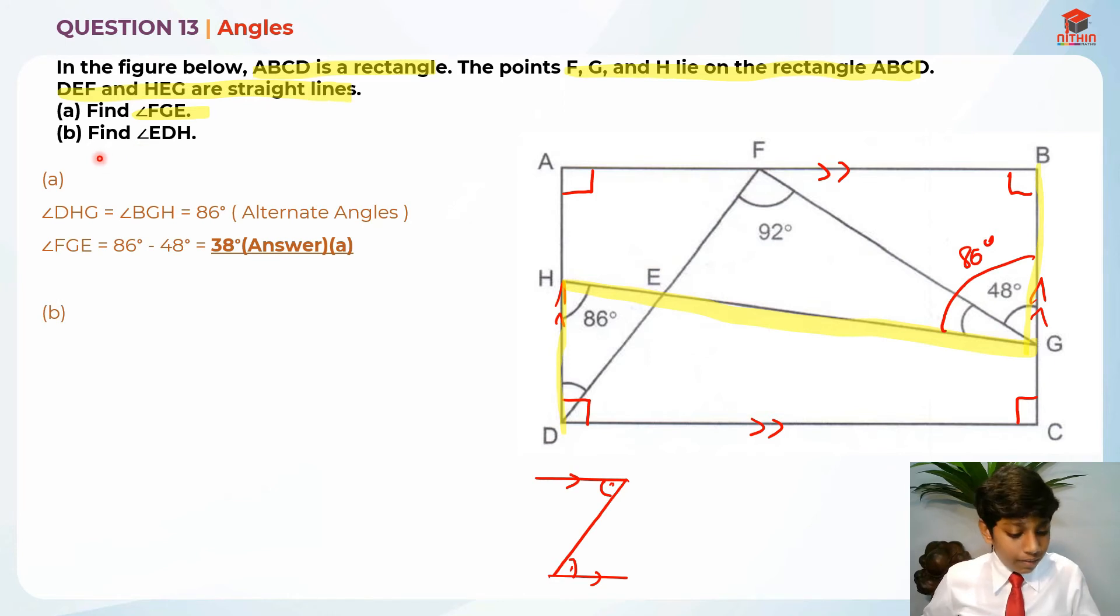Part B. Find angle EDH. Where is angle EDH? Let me reset the highlighted portion. Where is angle EDH? E, where is E first? It's here. And where is D? Here. And H is here. So this is the angle that we need to find. So let me erase this right angle as well so it can give us some more space.